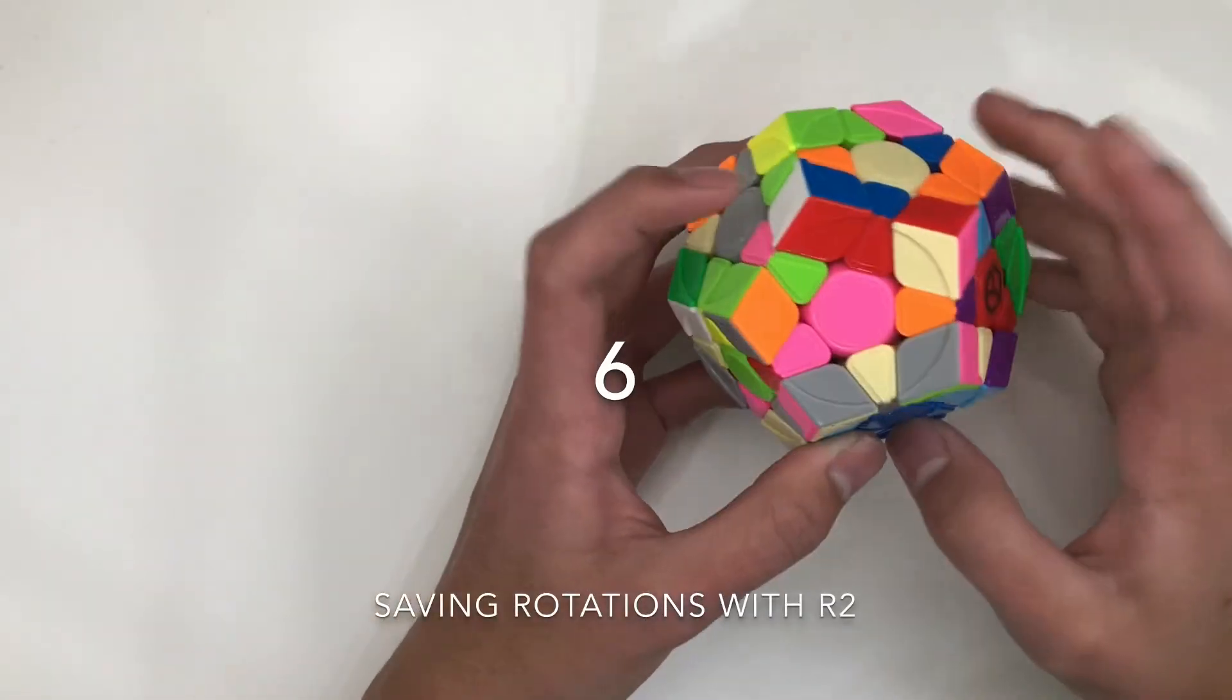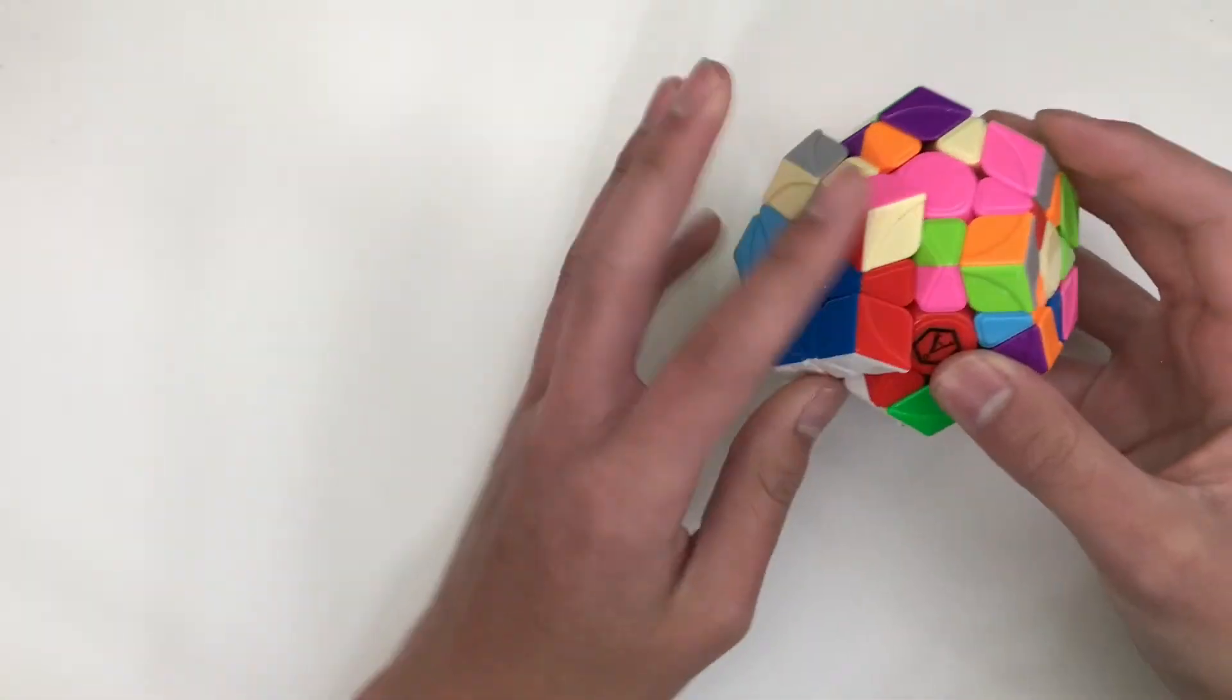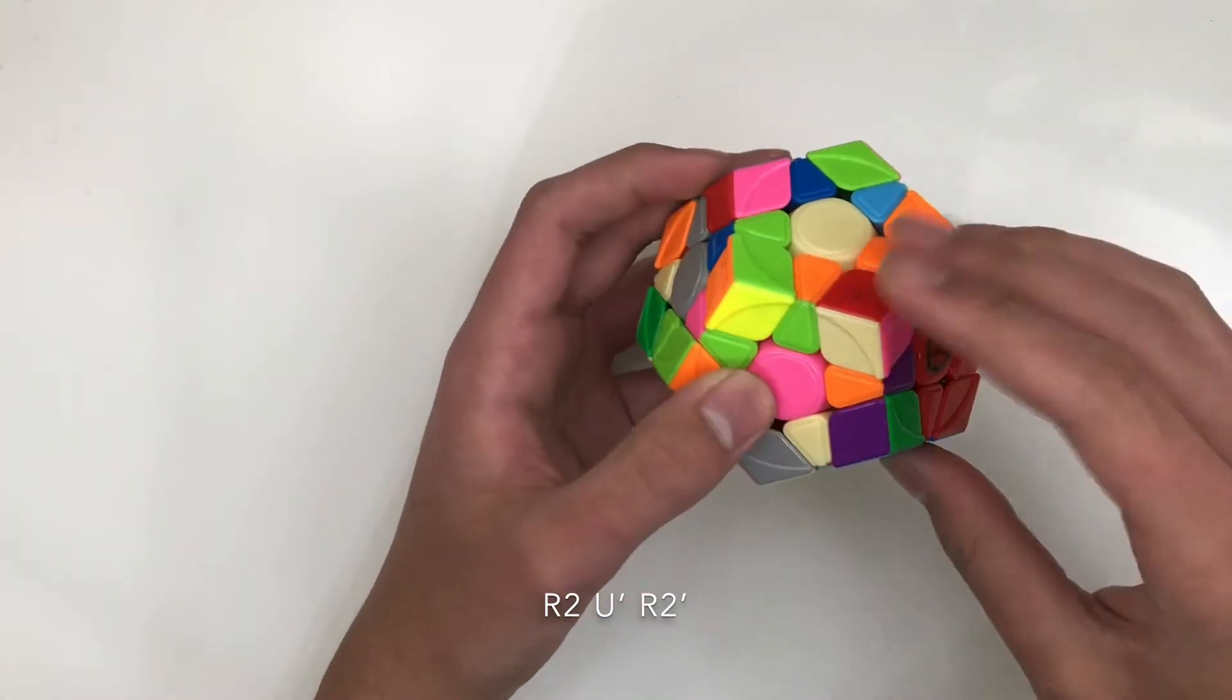If you're in this position, where you have your pair right here, and your slot is down here, instead of doing a rotation and inserting like that with L moves or something, you can just do R2, U', R2'.